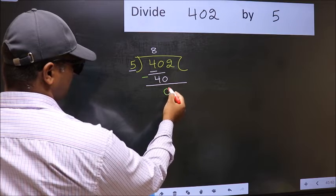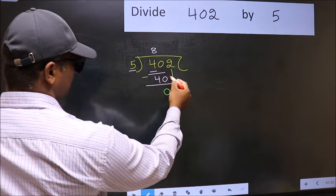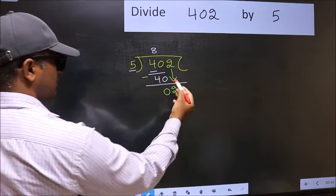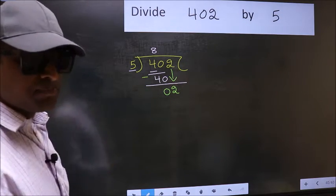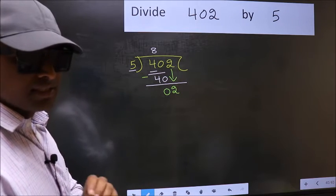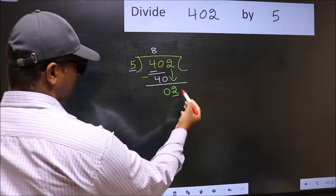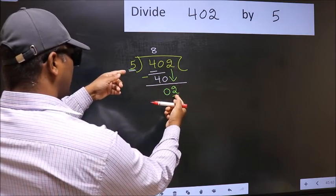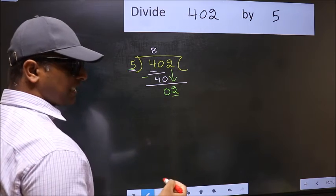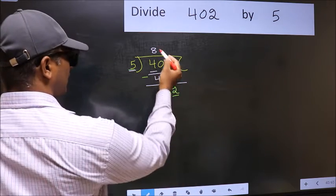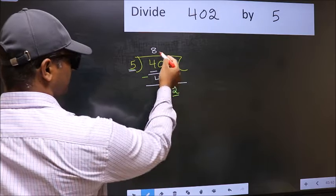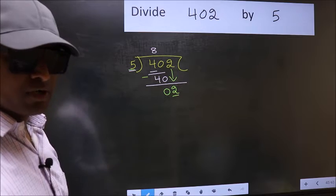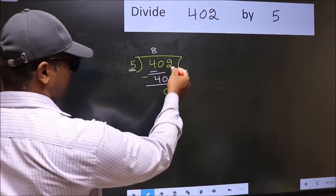After this, bring down the beside number, so 2 down. After this step, the mistake happens. The mistake is this: here we have 2 and here 5. 2 is smaller than 5, so what many do is they directly put dot and take 0, which is wrong.